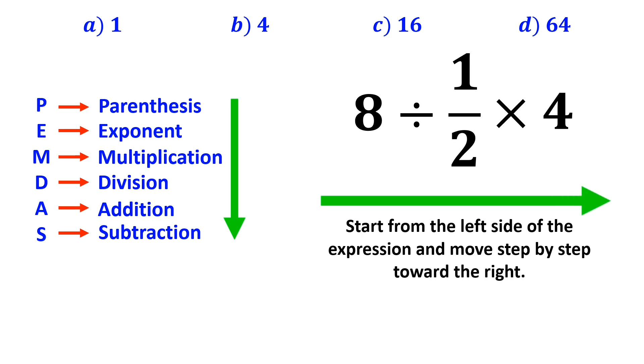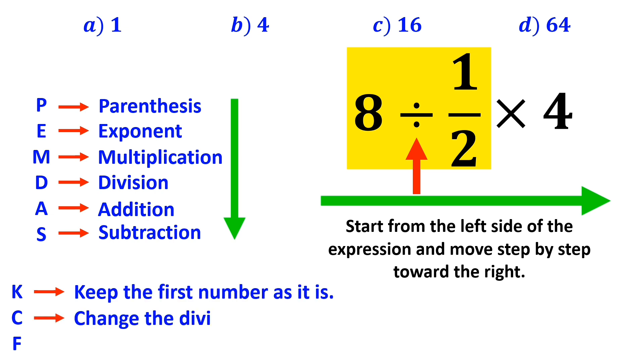So, first we start with the expression 8 divided by 1 half. Whenever we come across a division sign between two terms, the best thing to do is to apply the KCF rule. In this rule, K means keep the first number as it is, C means change the division sign to multiplication, and F means flip the second fraction.